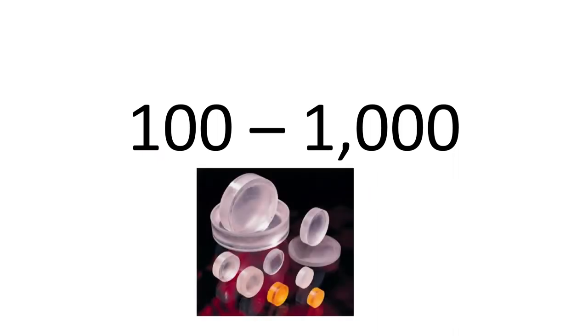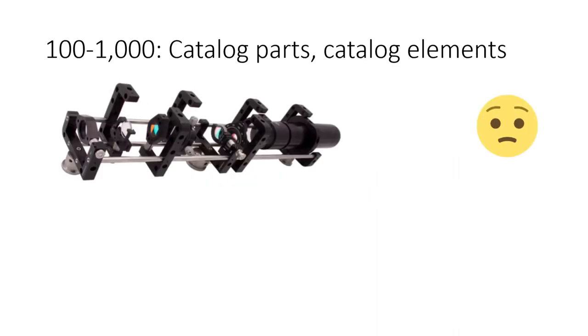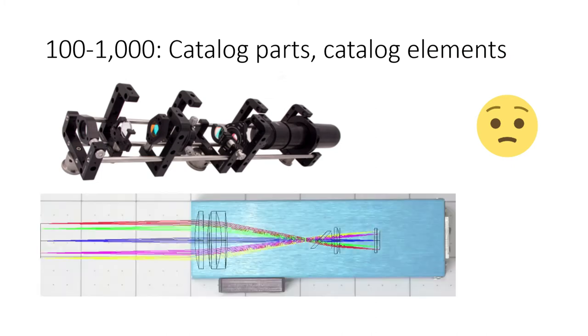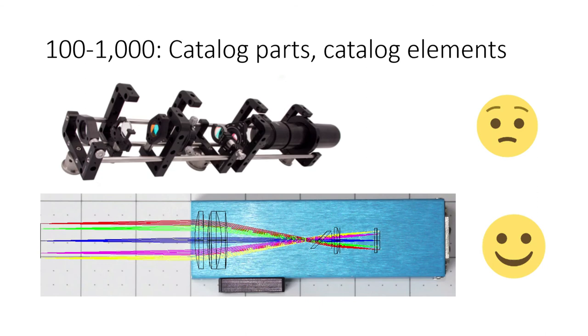Going into the next set of quantities. At this point, you probably want to give up these catalog parts. You're paying a premium for the flexibility, for the adjustability. You have probably too many adjustments, more than you need. And it's time to have a mechanical engineer make something that's just right for your application. And hopefully get all the adjustments onto one piece. But making a custom lens out of commercial elements is still a good idea in these quantities and even higher.